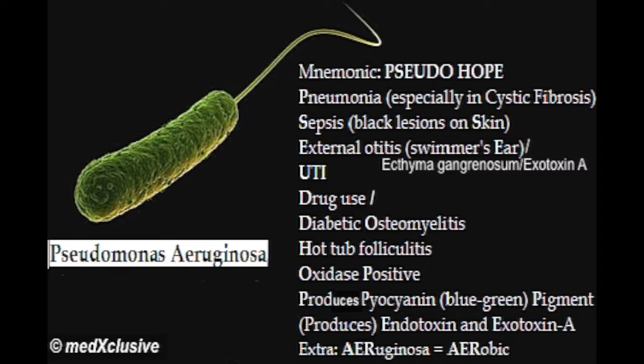The second P reminds us that it produces pyocyanin pigment. It also produces endotoxin. N — exotoxin A. AER in the name aeruginosa reminds us that Pseudomonas is aerobic. Hope this helps.